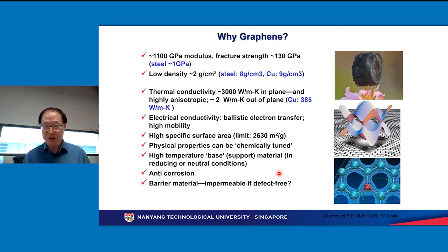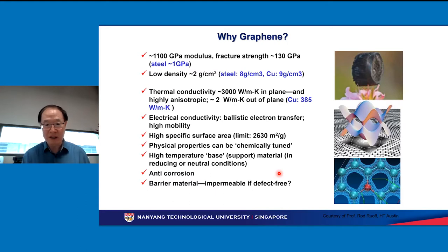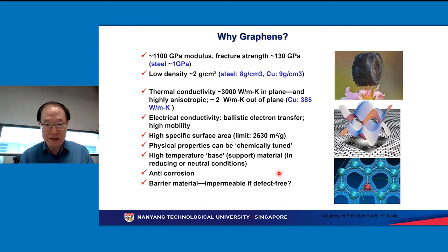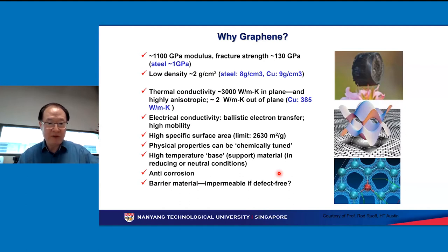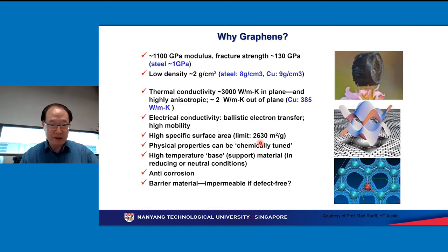Graphene's electric conductivity is very interesting — it doesn't follow Ohm's law. We all know that resistance is proportional to the length of the material, but graphene doesn't follow this. The resistance mainly comes from impurities and from the edges. So basically, if you have perfect graphene that is very long, it has no resistance. It's an ideal nanomaterial with a very large specific surface area, and because it's only one atomic layer thick, it theoretically has the largest specific surface area possible.